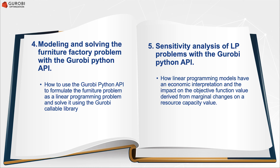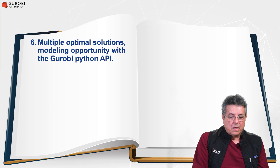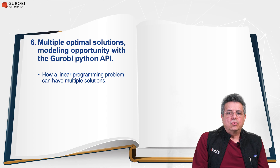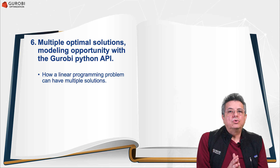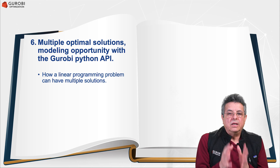This type of analysis led some economists to win the Nobel Prize in economics based on the economic interpretation of linear programming, making it a very important subject. In section six, we are going to show how a linear programming problem can have multiple solutions, and how having multiple solutions presents an opportunity to improve the linear programming problem formulation.